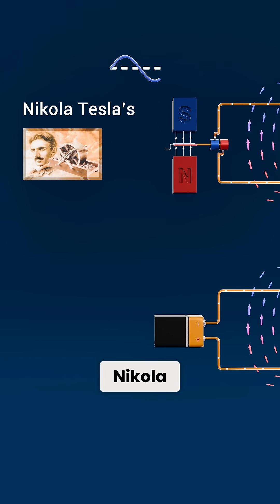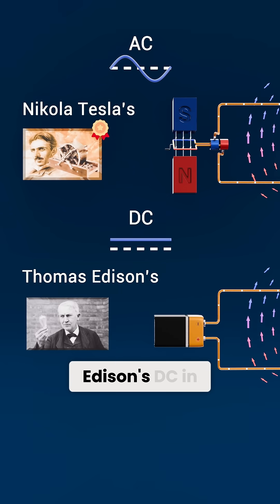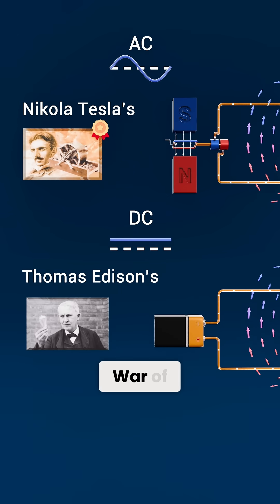This is why Nikola Tesla's AC system beat Thomas Edison's DC in the famous War of the Currents.